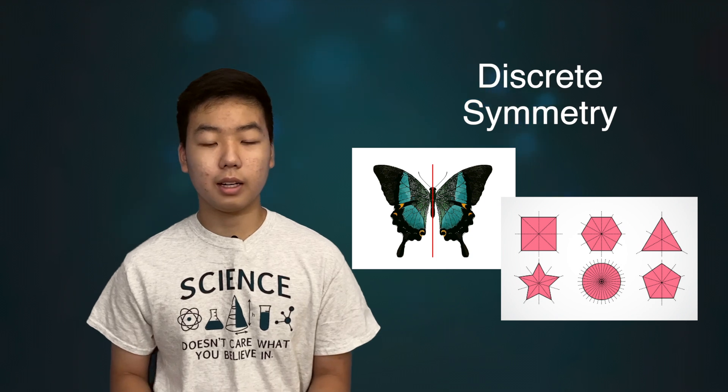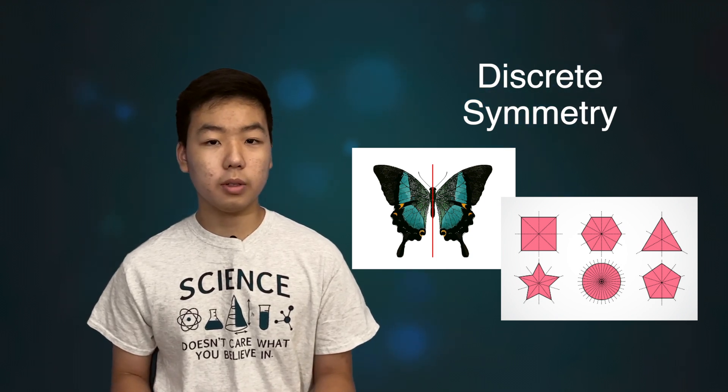But we're not talking about that kind of symmetry. Noether's theorem deals with continuous symmetry. A system is said to be continuously symmetric if you can apply some kind of transformation to it and still have it behave in the same way. For example, here's a ball moving in a straight line.